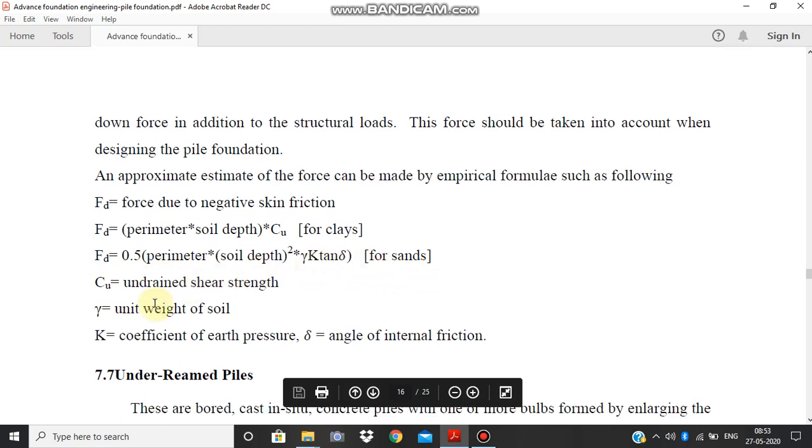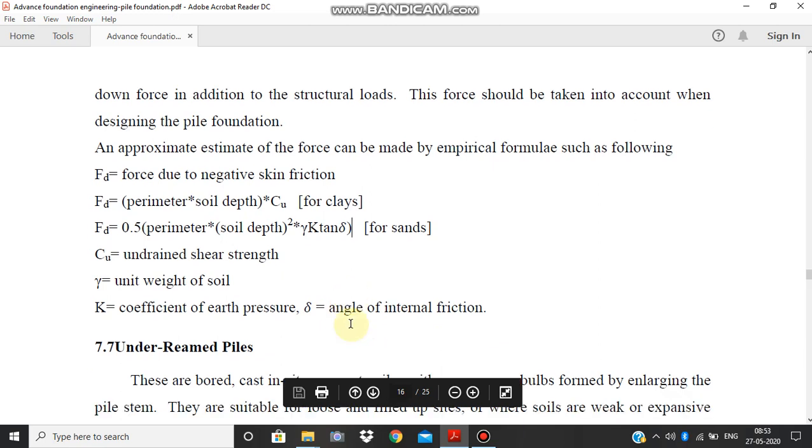What is this C_u? C_u is undrained shear strength. Gamma is unit weight of soil. K is the coefficient of earth pressure. And what is delta? It is angle of internal friction. So this was your negative skin friction topic.